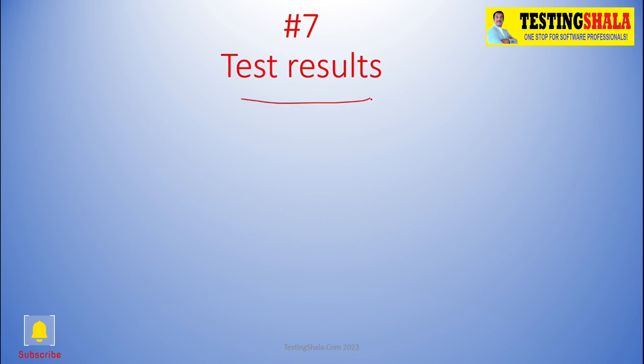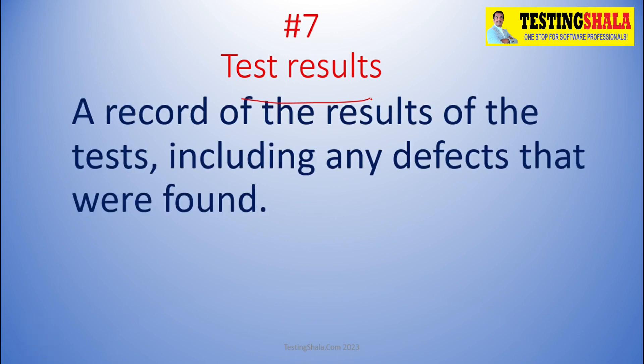The seventh deliverable is test results. Test results are very key — here we track all records of the test results, whether it is manual testing or automated testing. Everything will be documented, sometimes managed in an Excel sheet or sometimes in a web or desktop application, in order to manage overall test case results including any defects logged during test case execution.